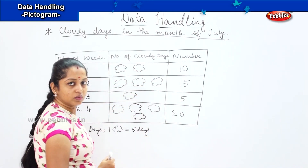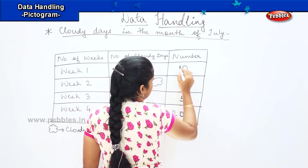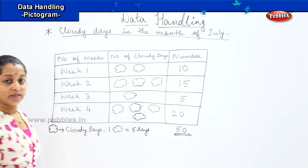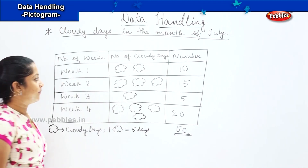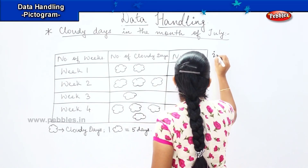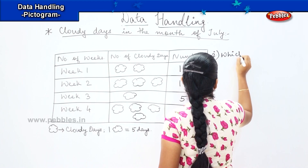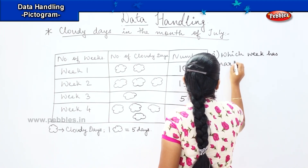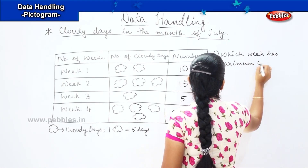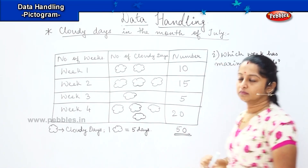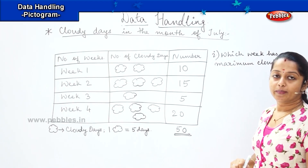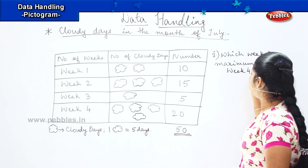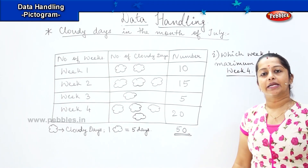What is the total? Counting across all weeks: 2 + 3 + 1 + 4 = 10 clouds total, which equals 50 days in the month of July. My first question is: which week has maximum clouds? Week one has two, week two has three, week three has one, and week four has four. So week four is having maximum clouds.